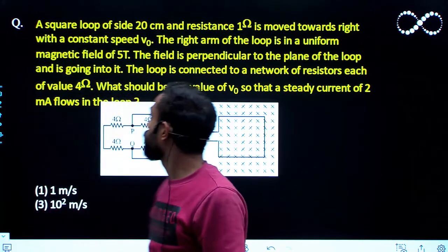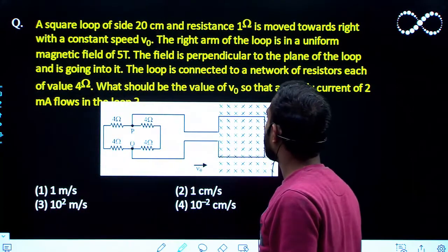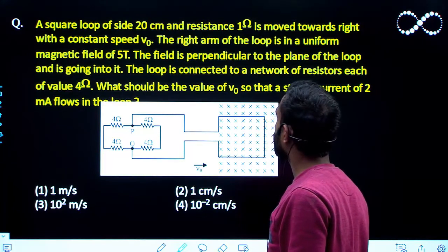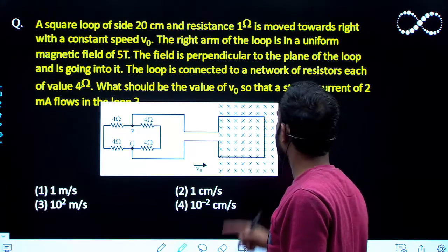Hello students, let us see this question here. A square loop of side 20 cm and resistance 1 ohm is moved towards right with a constant speed V0.